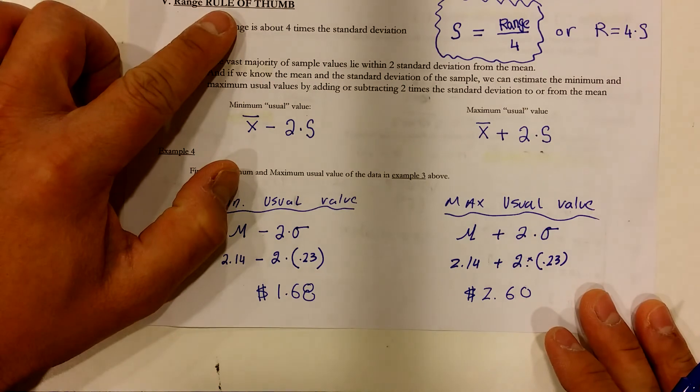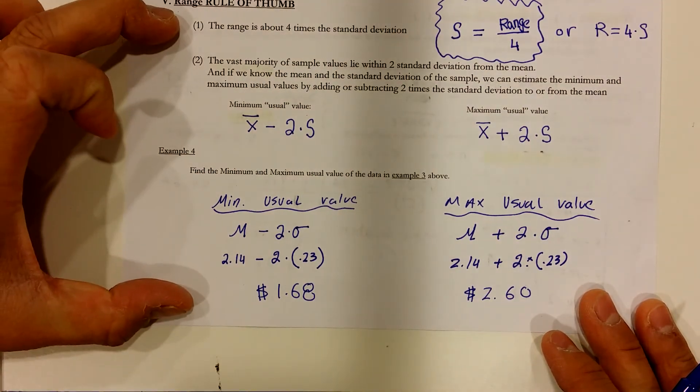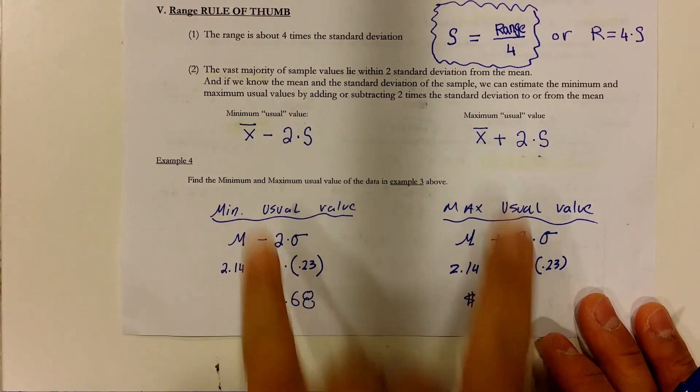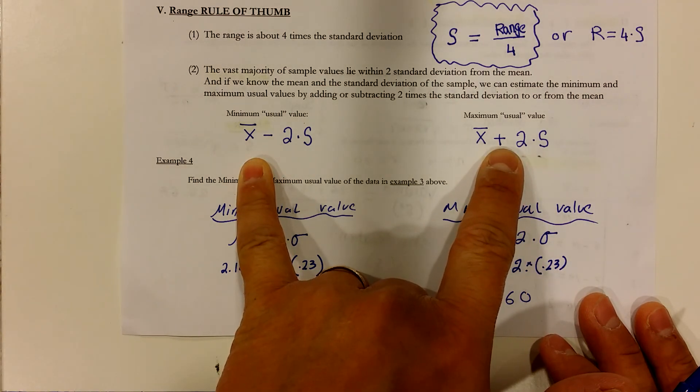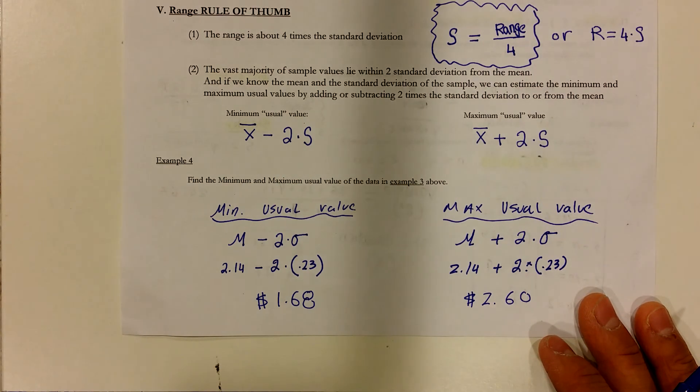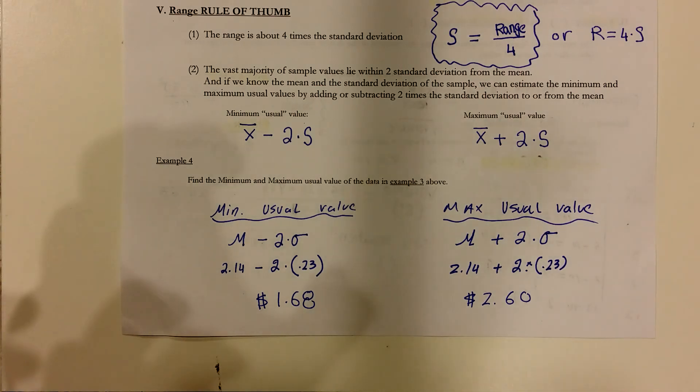Very good. And that's our rule of thumb. So, review the rule of thumb, especially the usual value, minimum usual value, and maximum usual value. And then I will show you what's the next part for the empirical rule, which is the last part of section 3.3.